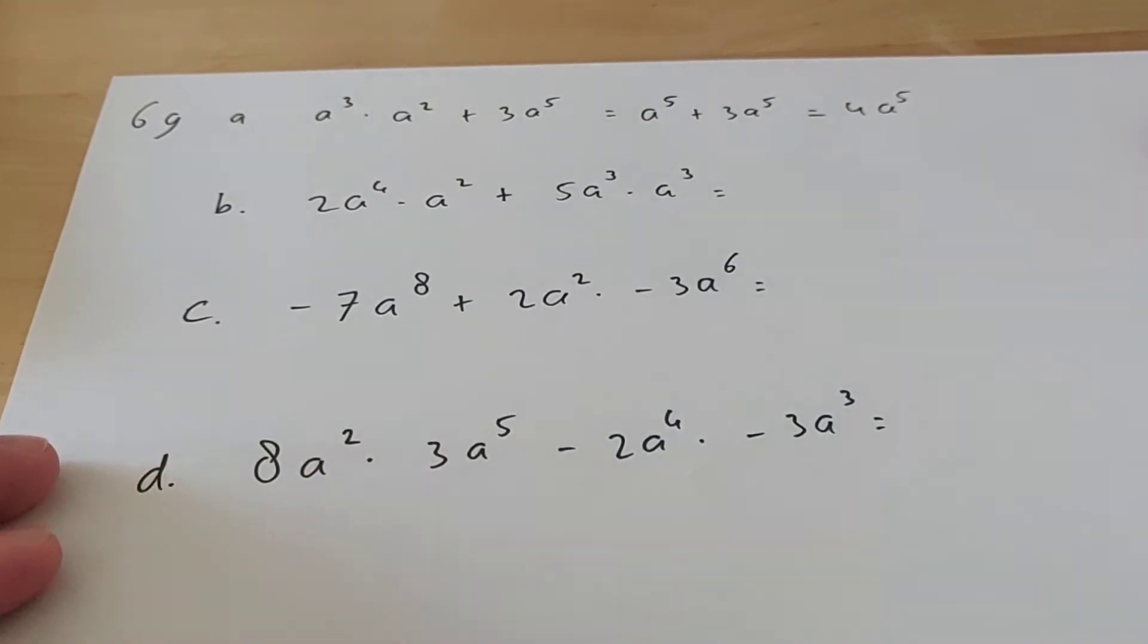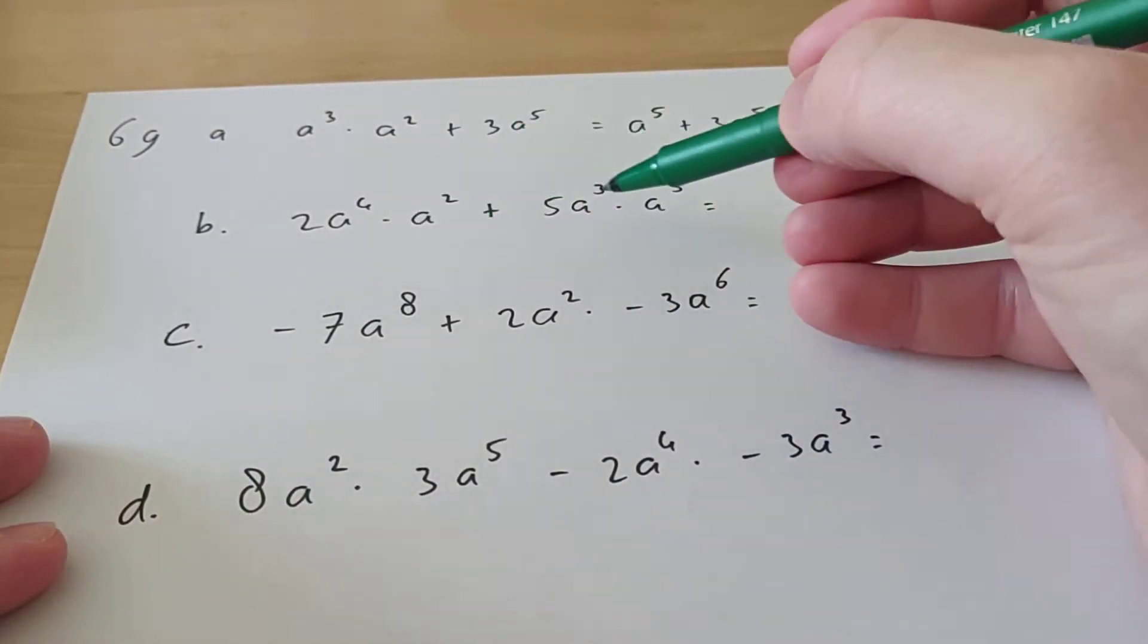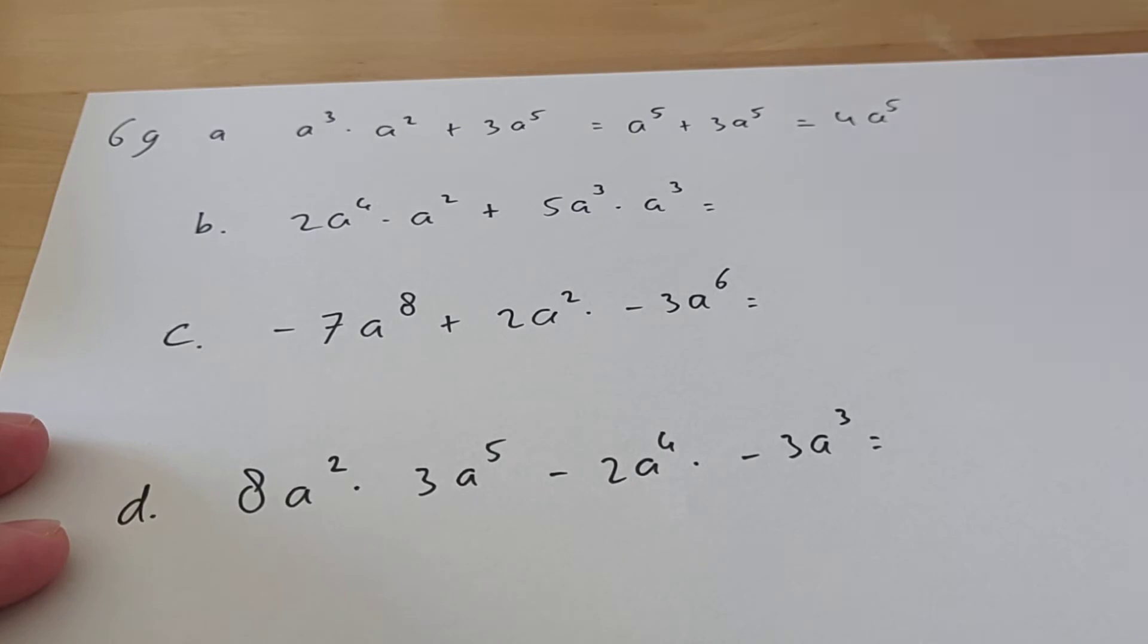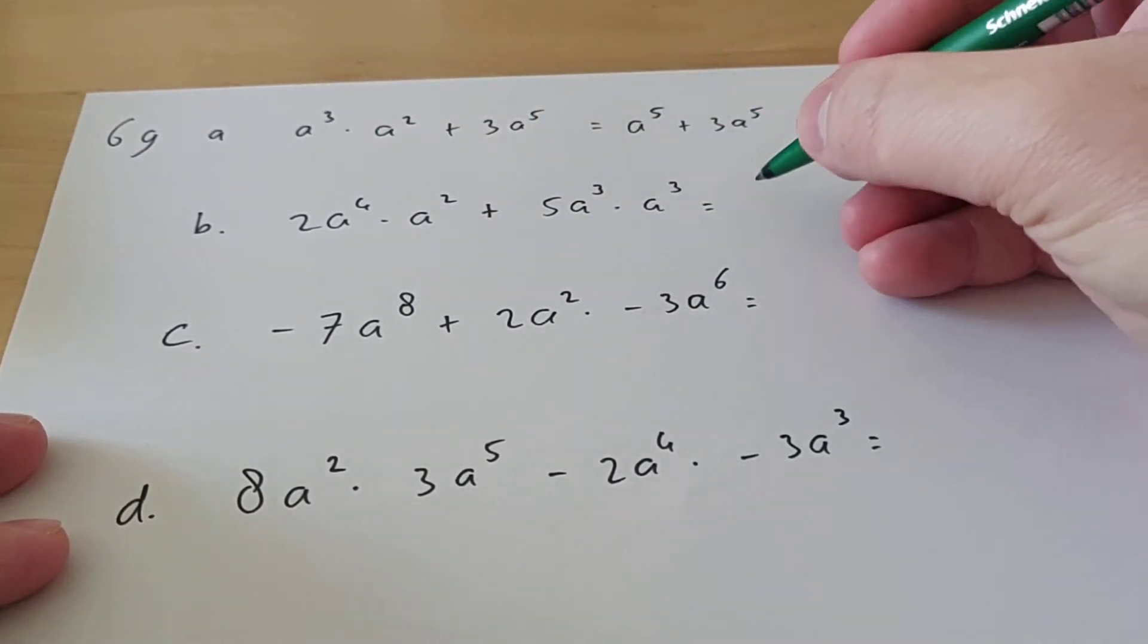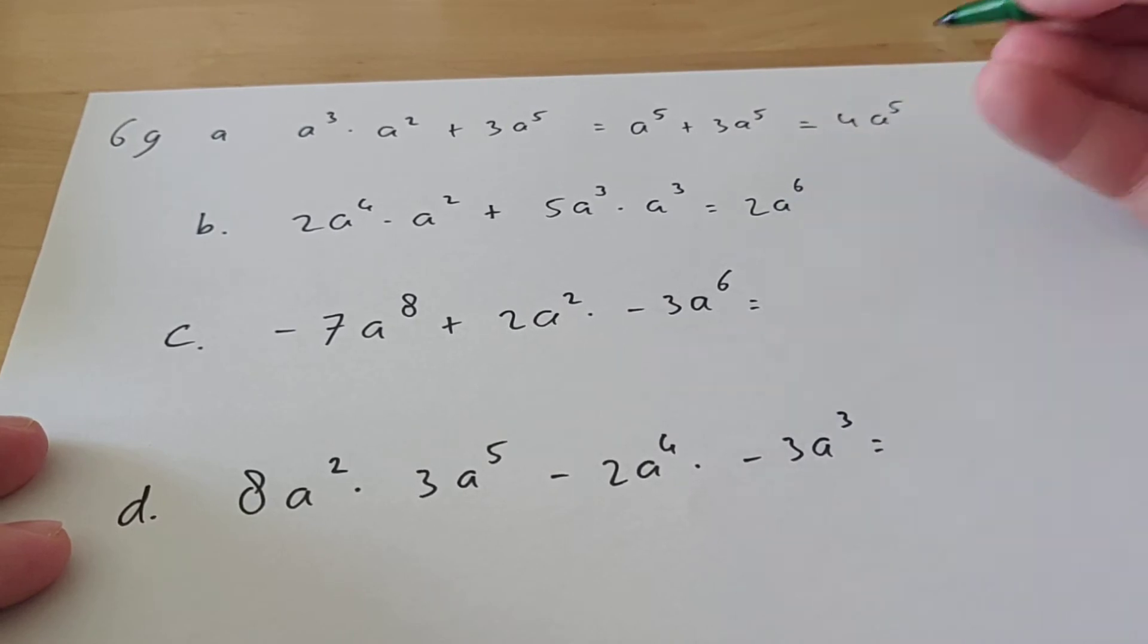Then we're going to go to exercise b. Here you have to calculate this and that first, and then we can add it. So here you have 2a^4 times a^2, so that's 2a^6.